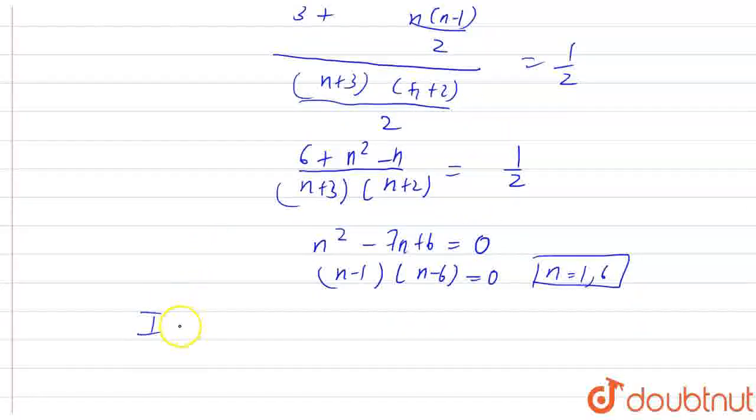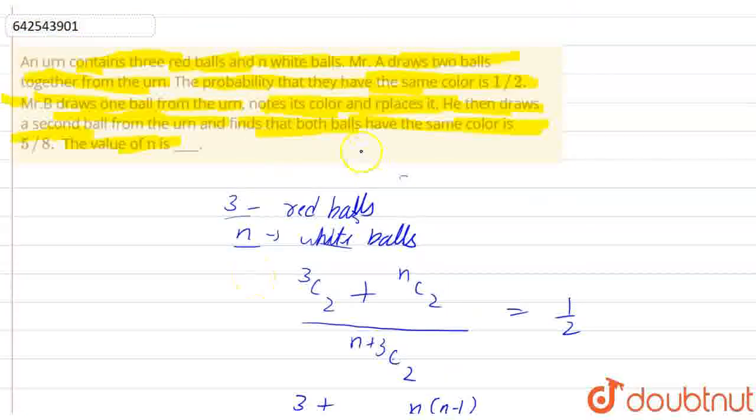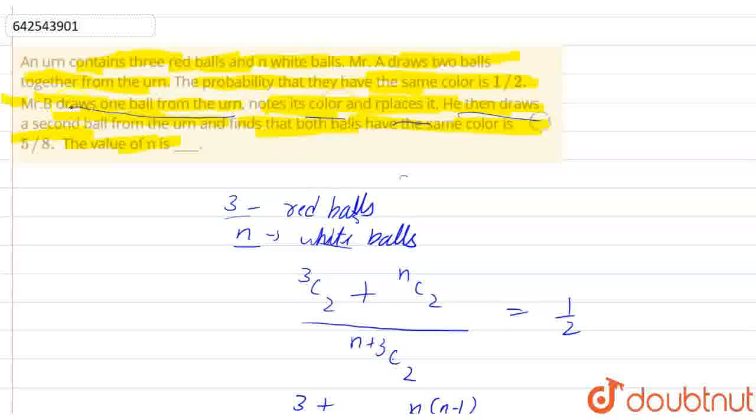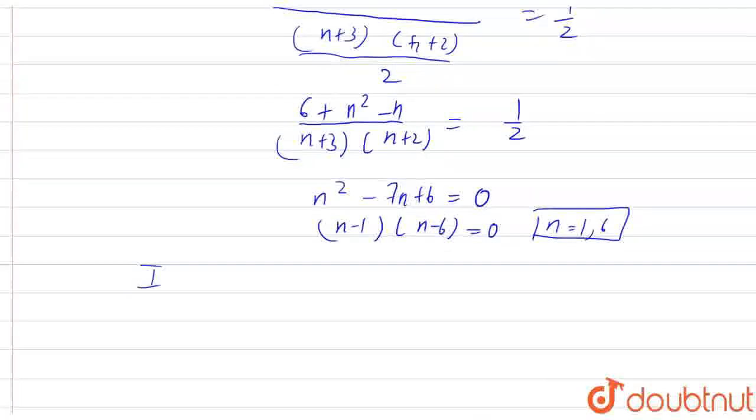If you remember, it is given that Mr. B drew one ball from the urn, noted its color and replaced it. He then drew a second ball from the urn and found that both balls have the same color. So there are 2 cases.